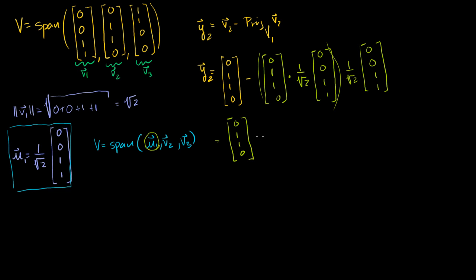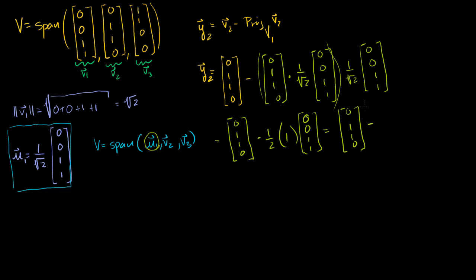The two (1/√2) factors multiply to give 1/2. The dot product of V2 with (0, 0, 1, 1) gives 0·0 + 1·0 + 1·1 + 0·1 = 1. So Y2 = (0, 1, 1, 0) minus (1/2)(0, 0, 1, 1), which equals (0 − 0, 1 − 0, 1 − 1/2, 0 − 1/2) = (0, 1, 1/2, −1/2).